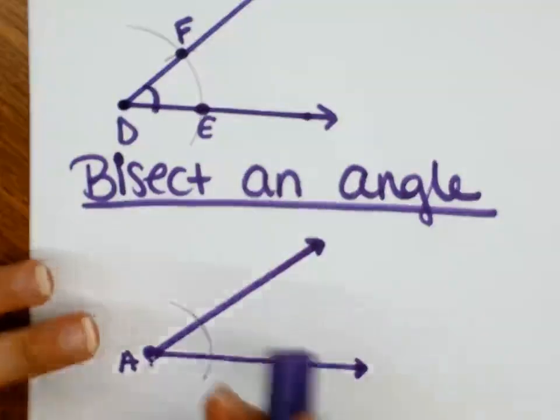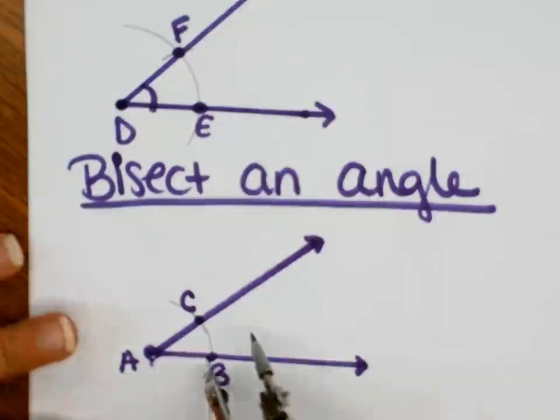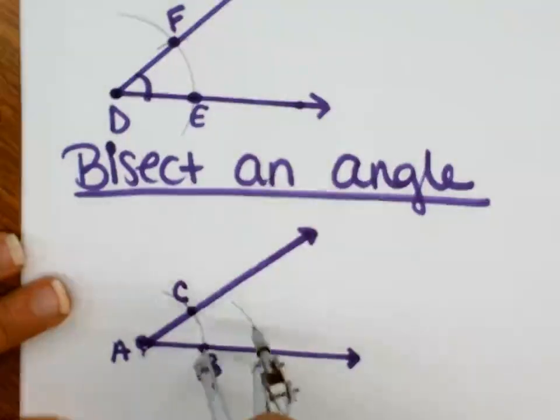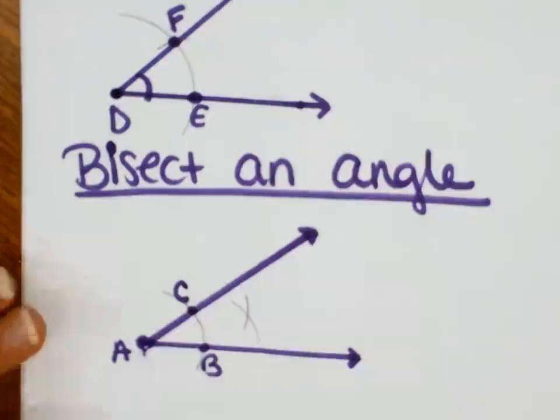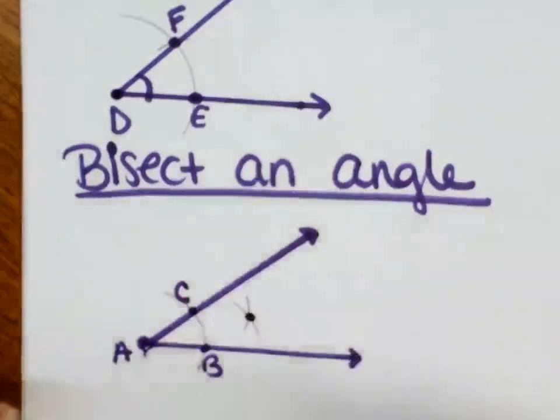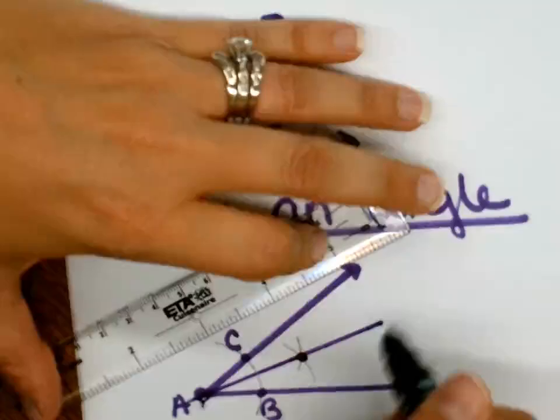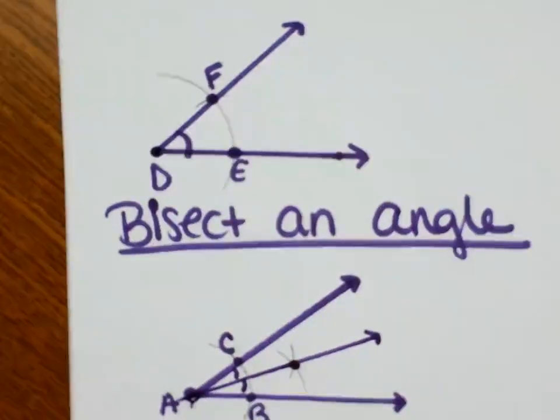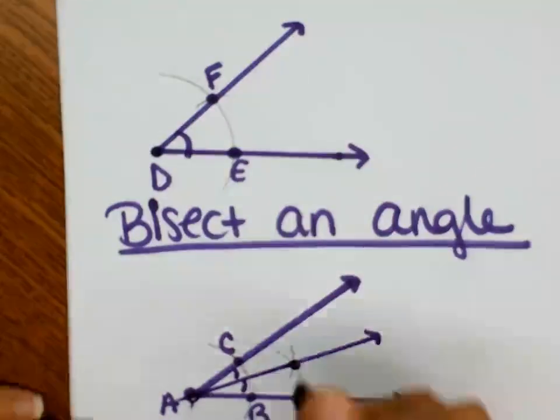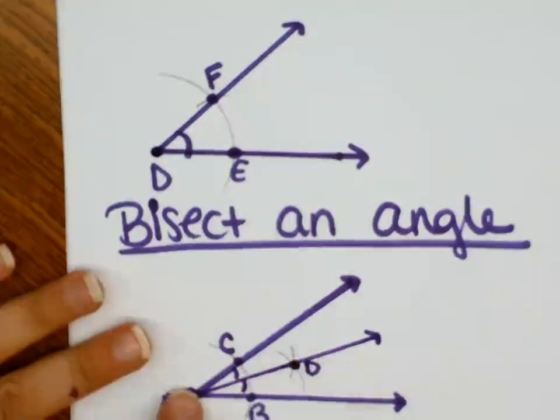Now we're going to call this B and C. Then what you do is you now put the sharp part on B to make an arc. Sharp part on C, make an arc. And where those arcs intersect, that point will connect with your vertex. And this angle is now bisected into two equal measurements. And I'll call that D. So now angle DAB is congruent to angle CAD.